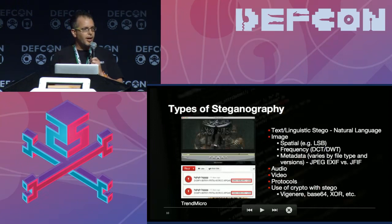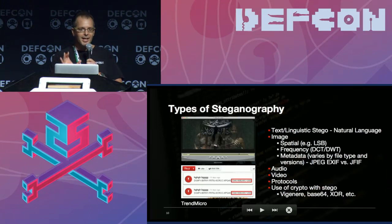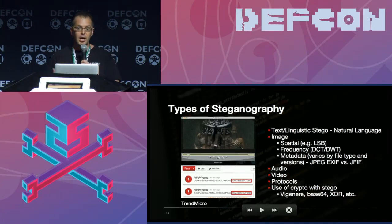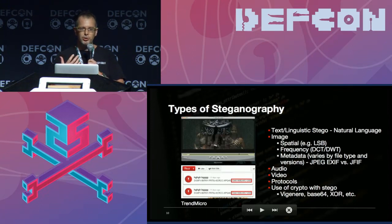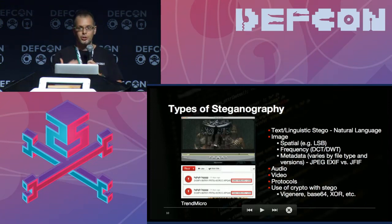Breaking steganography into categories — many of which we explored: linguistic stego basically modifies text by adding additional words, misspelled words, and other linguistic approaches to hide information in a very simple way. We've seen this employed on Twitter, Pinterest, and other social media, where you post something that looks like a bunch of words that don't make sense to us, but the intended recipient, a bot, or something else is extracting the pieces they're most interested in.